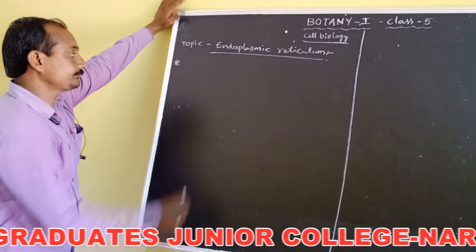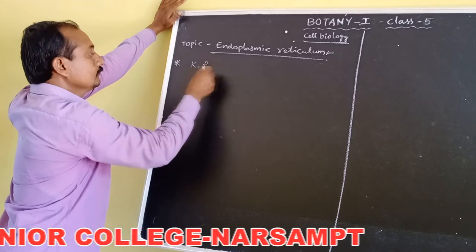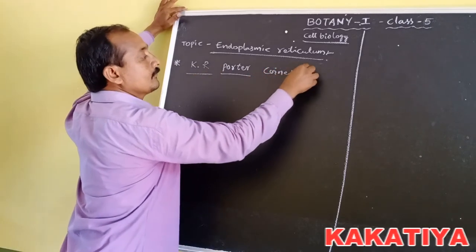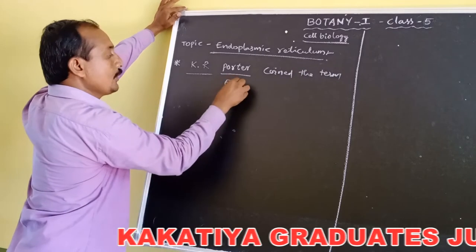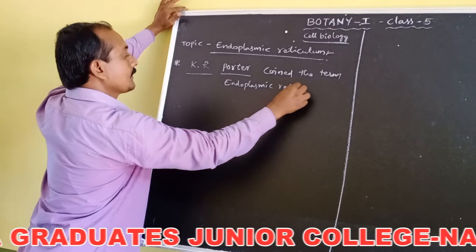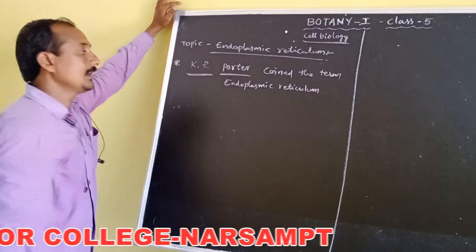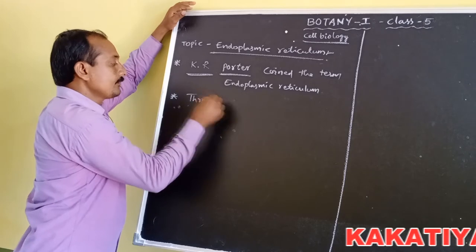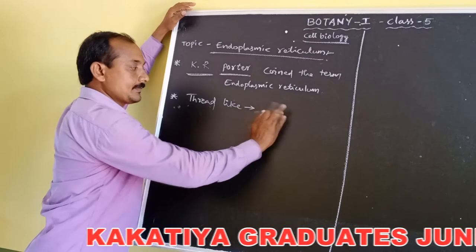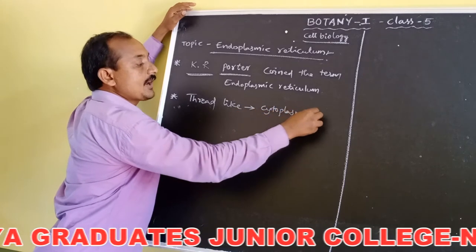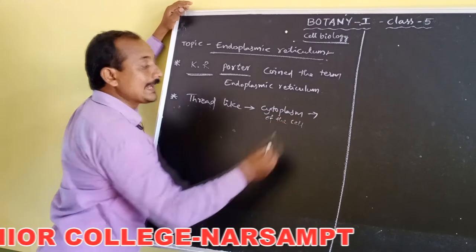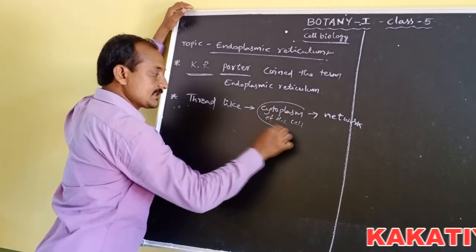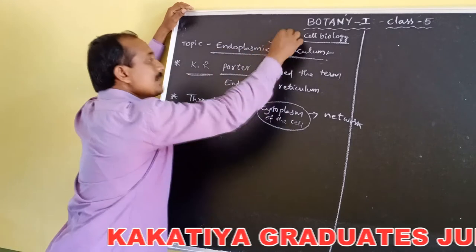Endoplasmic reticulum, or ER. KR Porter for the first time coined the term endoplasmic reticulum. It is a thread-like structure extending in the cytoplasm of the cell, arranged to form a network-like structure. This network of thread-like structures present in the cytoplasm is called ER or endoplasmic reticulum.